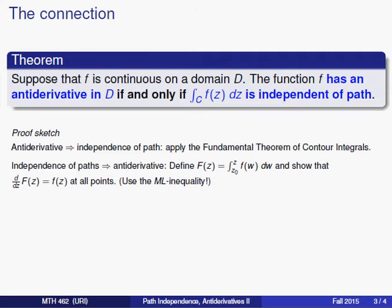Now for the converse implication, we want to start by assuming that we have independence of path, and then show that there is an anti-derivative. Now in order to show that an anti-derivative exists, it's easiest just to present one. And so that's what we do.